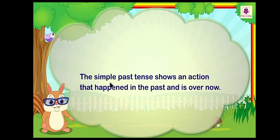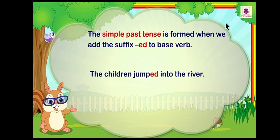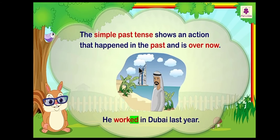Now, the simple past tense. The simple past tense shows an action that happened in the past and is over now. The simple past tense is formed when we add the suffix ED to the base verb — 'the children jumped into the river.' When we add ED to the present or base form of a verb, it becomes past tense. For example, 'he worked in Dubai last year' — ED shows it is past tense, and he is not working there now.